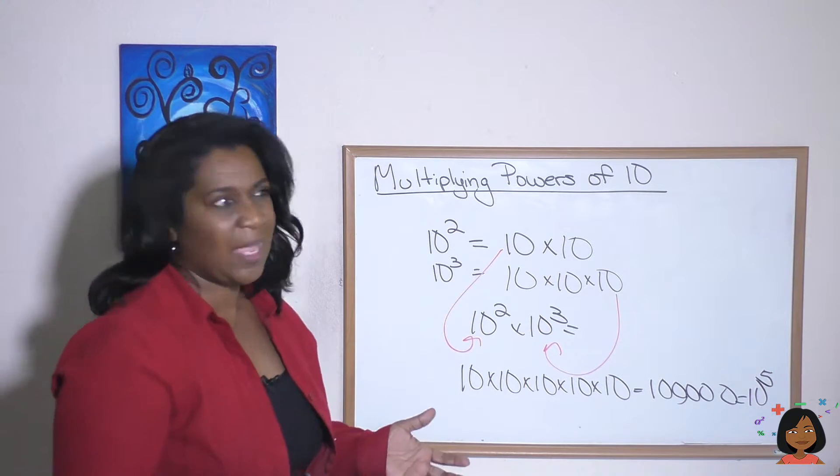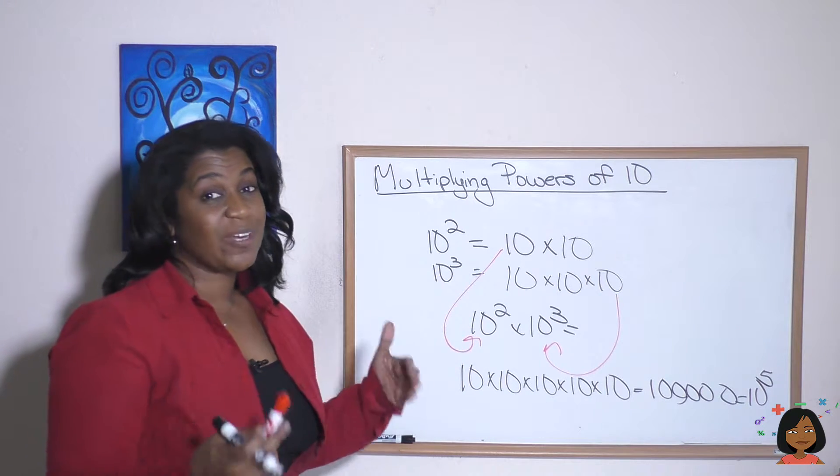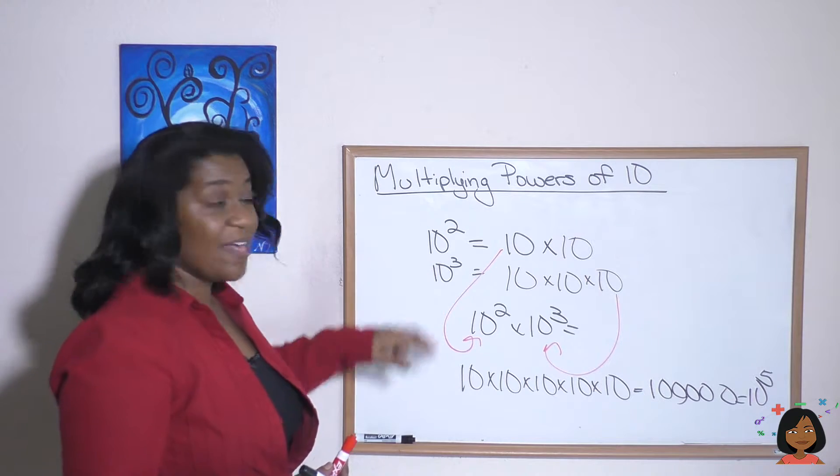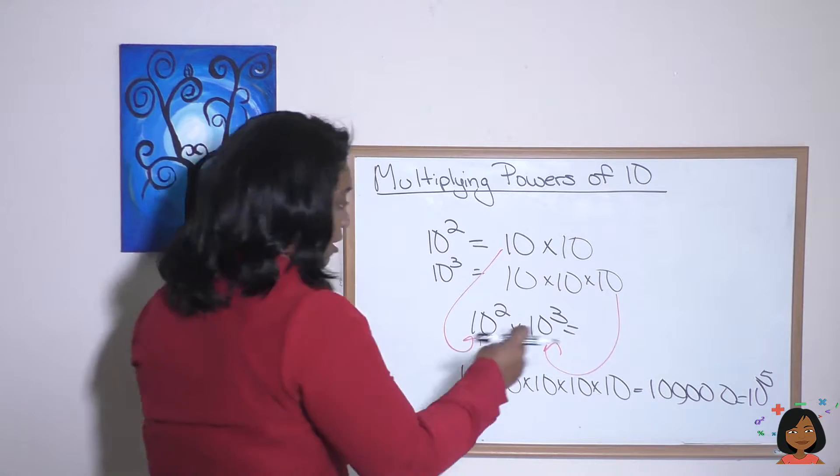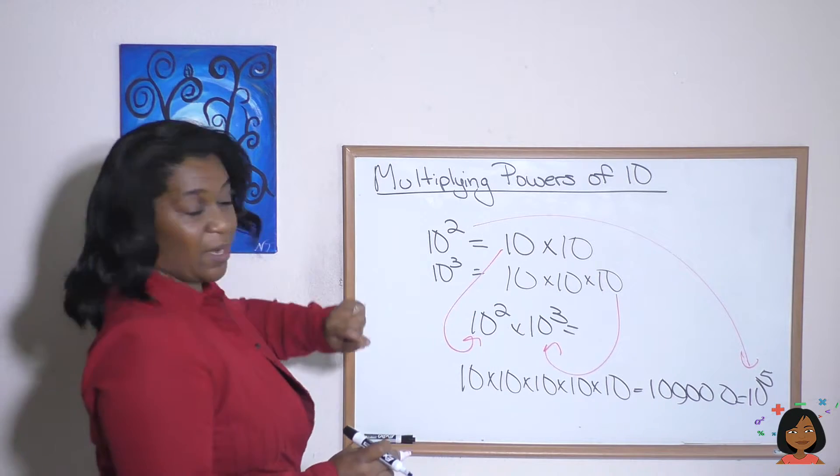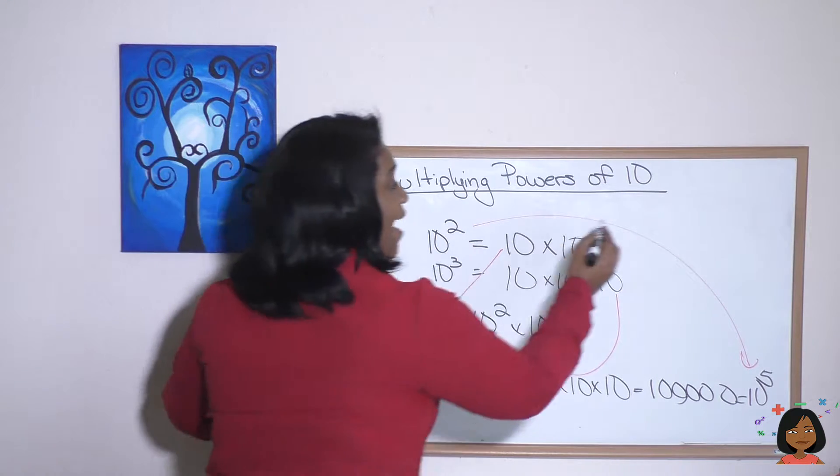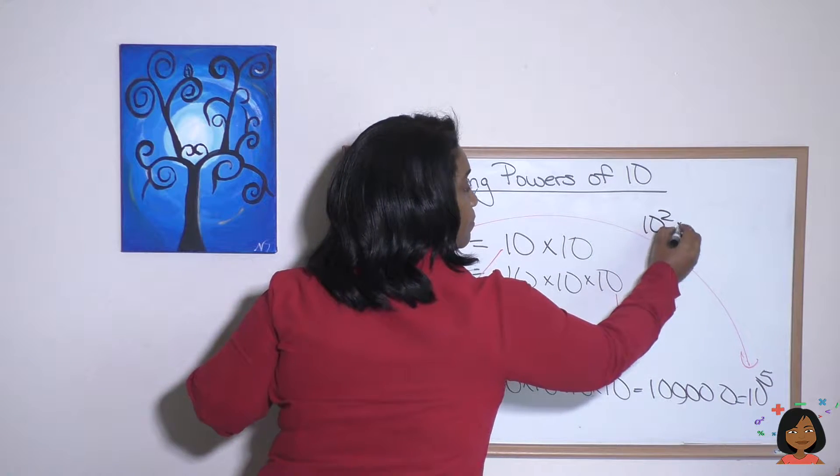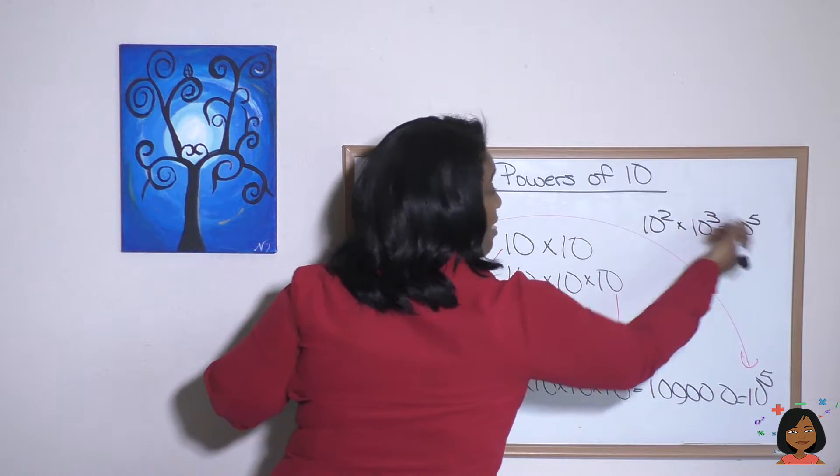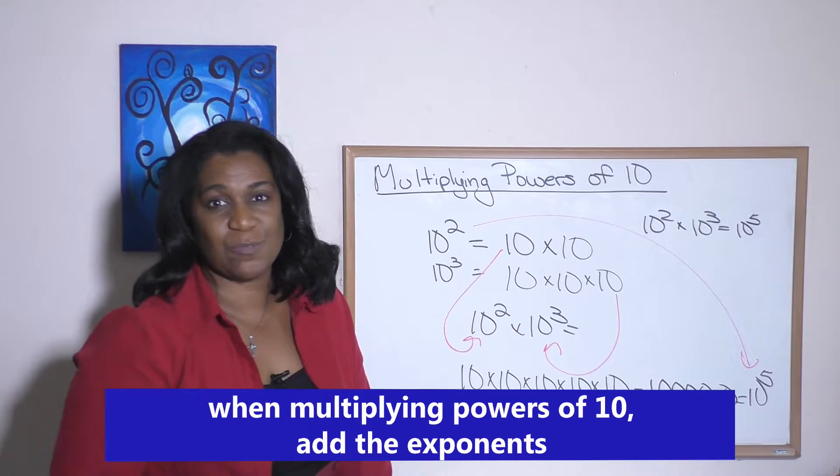Now, it'd be a real pain to have to write this out every single time you wanted to multiply. So the shorthand rule for multiplying exponents is you add the exponents. See, we ended up with our 10 to the fifth as our answer, right? So 10 squared times 10 to the third means we're going to add the two exponents. That's the rule. When multiplying powers of 10, add the exponents.